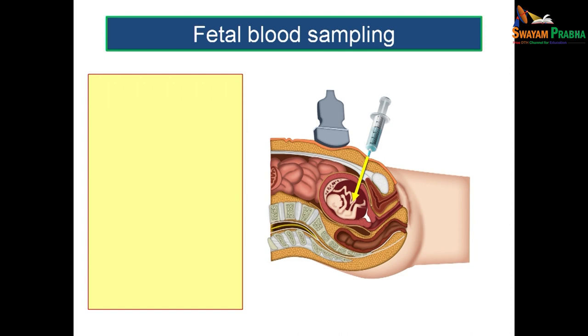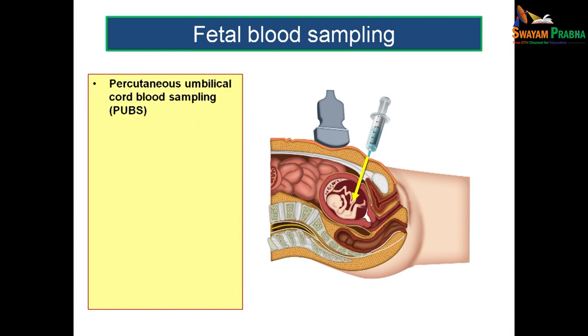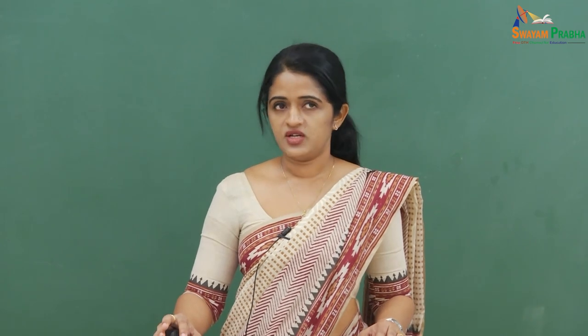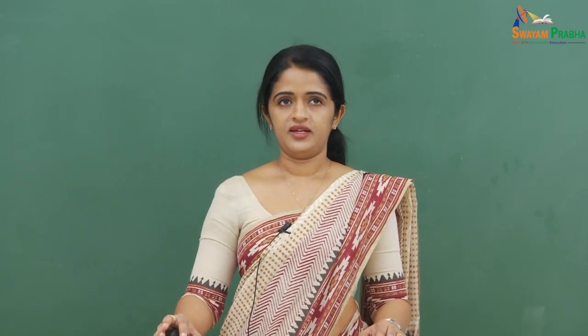Fetal blood sampling, otherwise known as percutaneous umbilical cord blood sampling, is usually done during 24 to 34 weeks of gestation. Fetal blood samples are taken for chromosomal analysis.